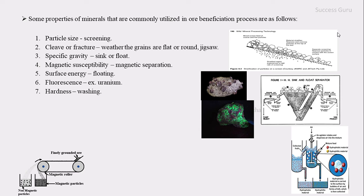The next property is hardness. When a rock is washed, the hardest material will stay while the soft material is washed away. By this method, we can also separate ore from gang mineral, so hardness is also included as a useful property in ore dressing.